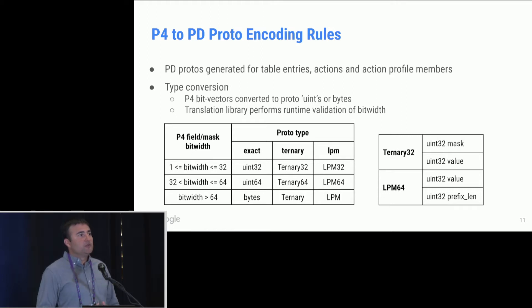So in order to have this PD gen tool, we need to define an encoding from the P4 program to the PD protos. The PD protos are generated for all table entries, actions, and action profile members, and we do type conversion. So the P4 bit vectors are converted to prototypes, and prototypes are, in this particular case, they're based on UINs. If you have fields that are smaller than 64 bits, then we are able to use UIN types, but if they're larger, for instance, in the case of IPv6 addresses, then you'd have to resort to bytes. And then the translation library performs the runtime bit width, runtime validation of the bit width.